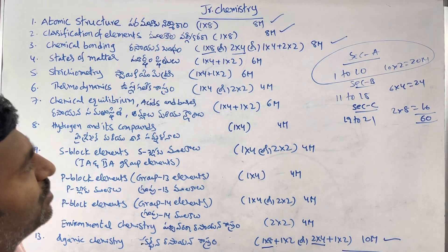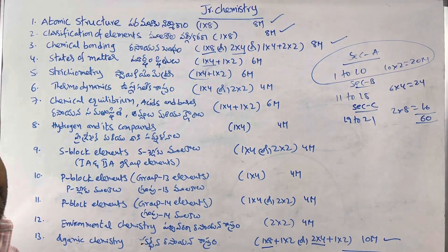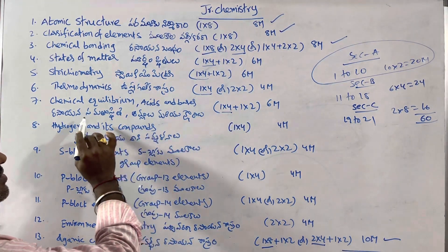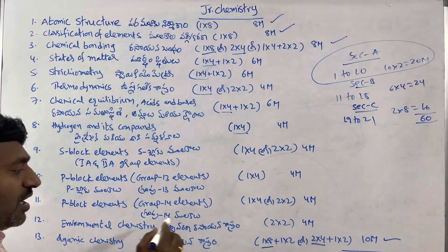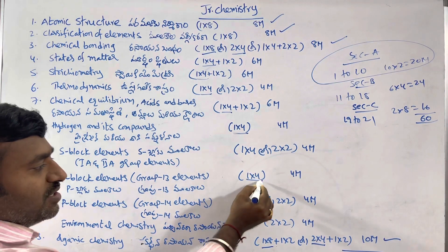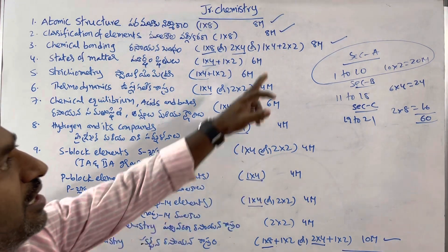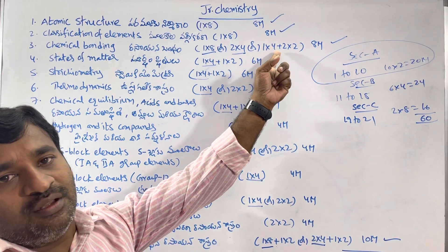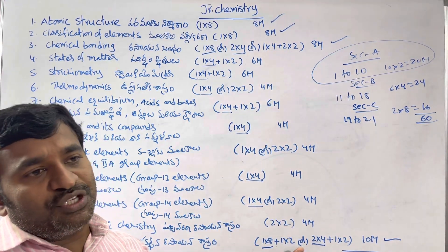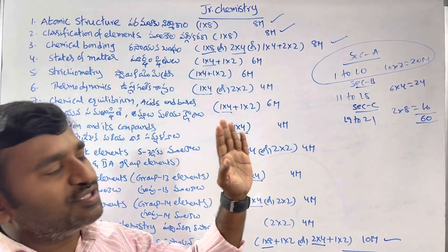Next, SAQs. States of Matter: 1 SAQ. Stoichiometry: 1 SAQ. Thermodynamics: 1 SAQ. Chemical Equilibrium: 1 SAQ. Hydrogen and its Compounds: 1 SAQ. P-Block Elements, Group 13: 1 SAQ. Another 2 SAQs are Chemical Bonding or Organic Chemistry — Chemical Bonding 8 marks, Organic Chemistry as alternate. Total 6 SAQs × 4 marks = 24 marks.